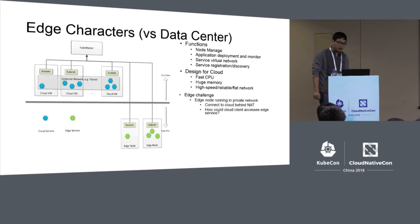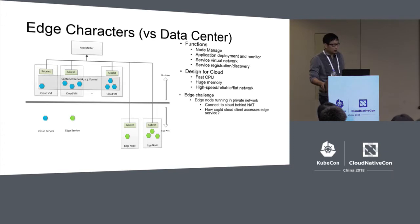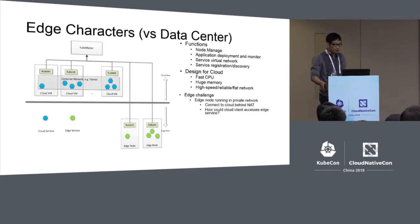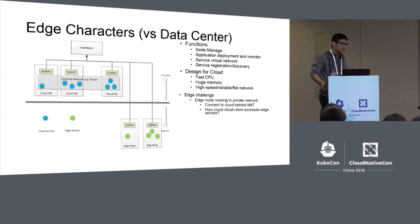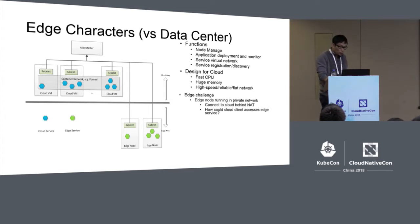Challenge number one is that edge nodes run in private networks. For example, a Raspberry Pi running in my home has no public IP address. It connects to the internet through NAT, so services running on that node cannot be accessed directly by clients running in the cloud. We need to handle this NAT issue.